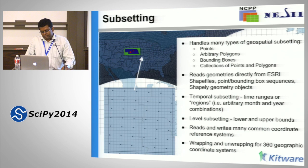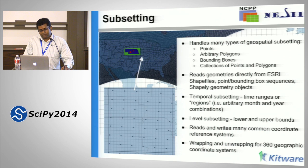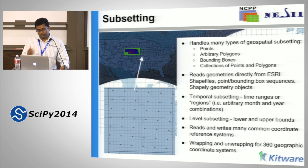One of the nice things about Open Climate GIS is it handles many types of geospatial subsetting: points, arbitrary polygons, bounding boxes, and collections of points and polygons. Pretty much all general operations you would expect from a toolkit like this are supported. Most of the work currently is done serially—it's not parallelized yet—but the plan is that these tasks can be parallelized using the MPI API or other parallel techniques.